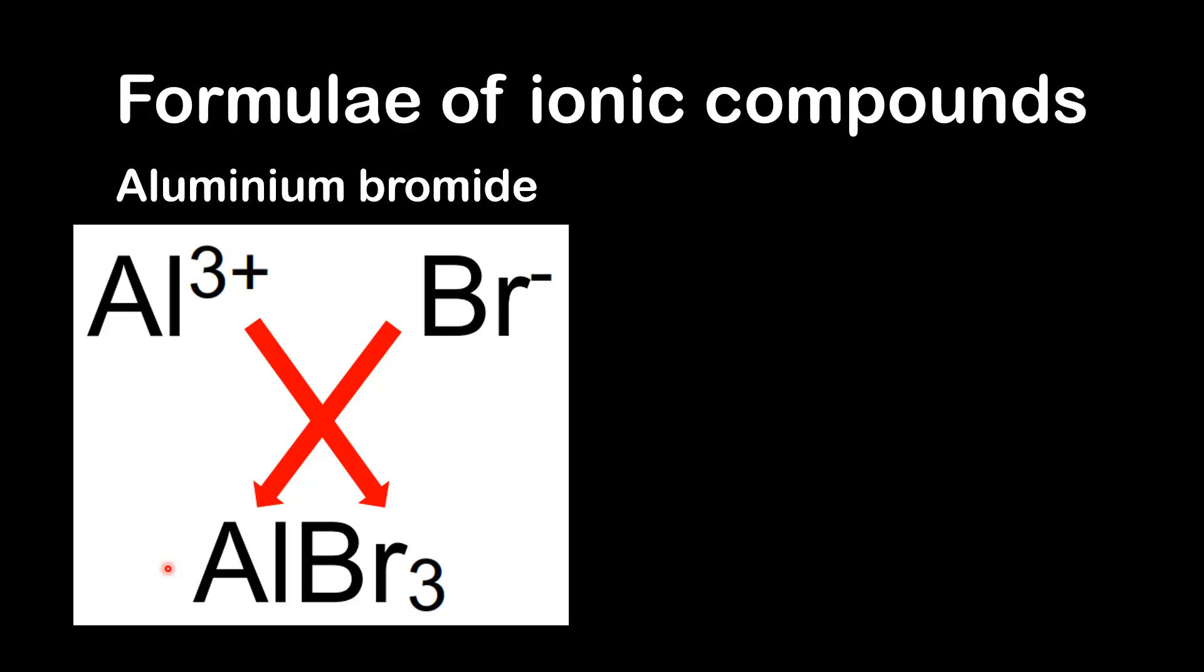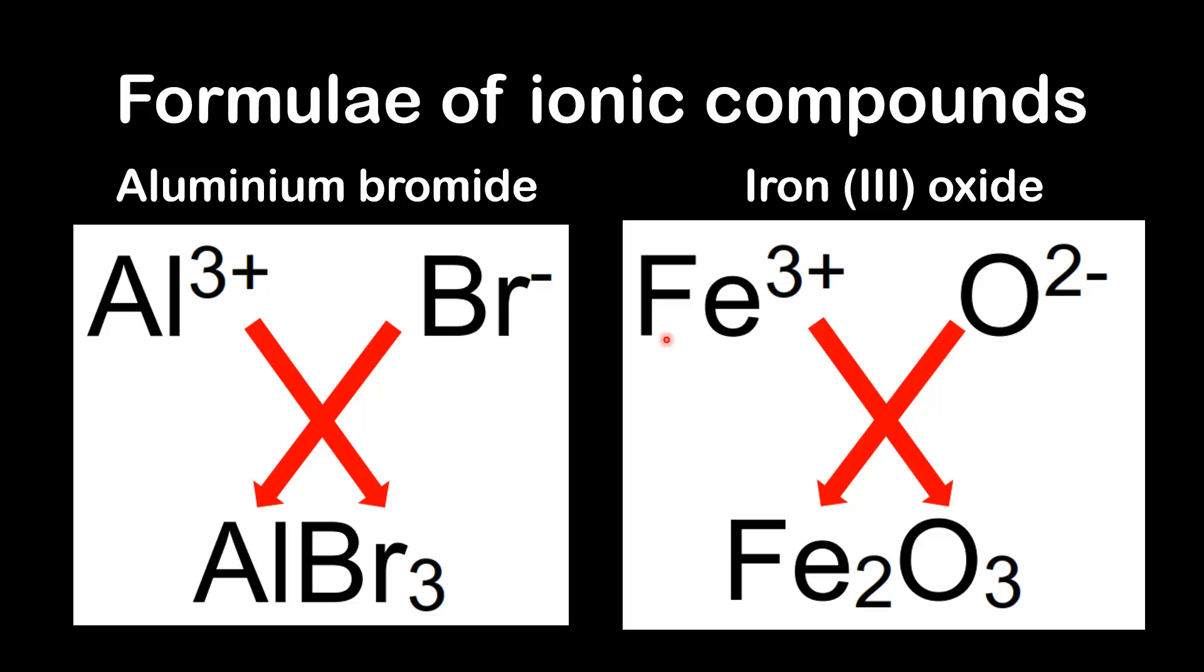Our next example is iron (III) oxide. The 3 in brackets refers to the oxidation state of the iron, which is also the same as the charge on the ion. So the iron ion has a 3+ charge and the oxide ion has a 2- charge. So we use the crossover technique. And the 3 goes down to the bottom here and the 2 goes down to here. So the formula for iron (III) oxide is Fe2O3.